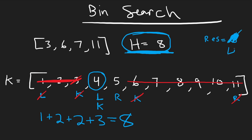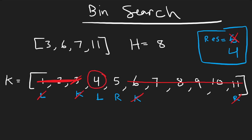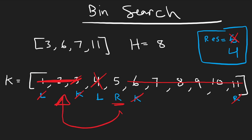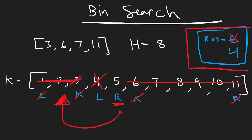Since k=4 worked, we try to find an even smaller value by shifting the right pointer to k-1=3. But now the left pointer (4) is greater than the right pointer (3), meaning they've crossed — our binary search stops. We return the current result, which is 4: the minimum eating speed for Koko.